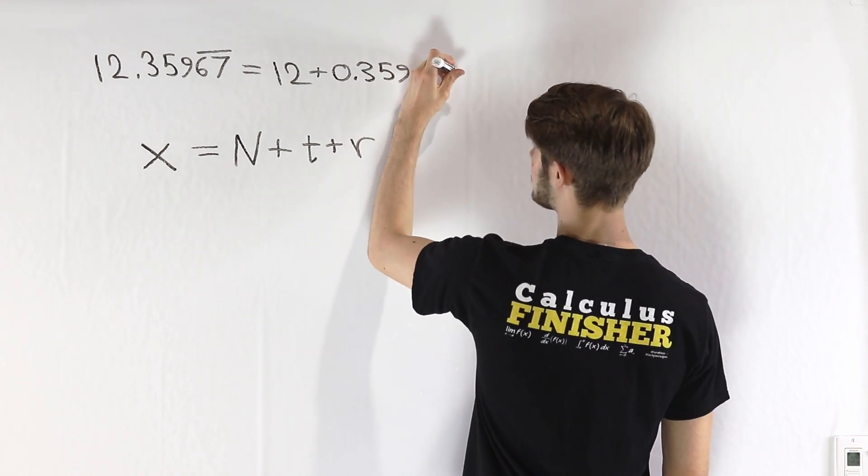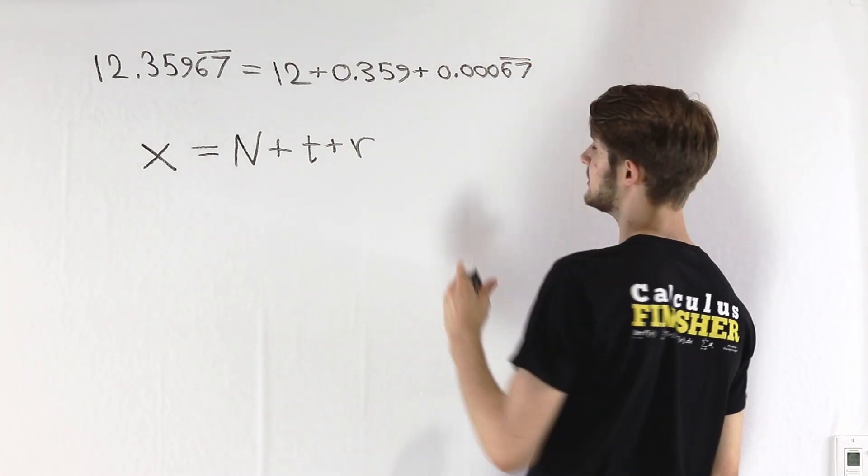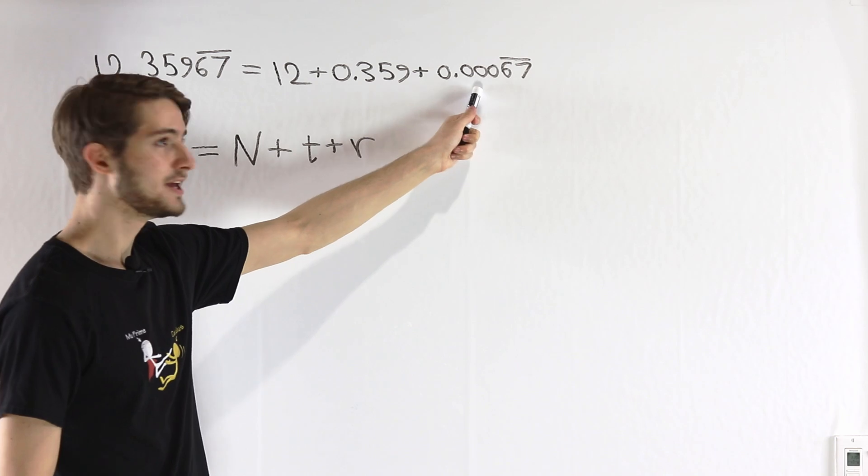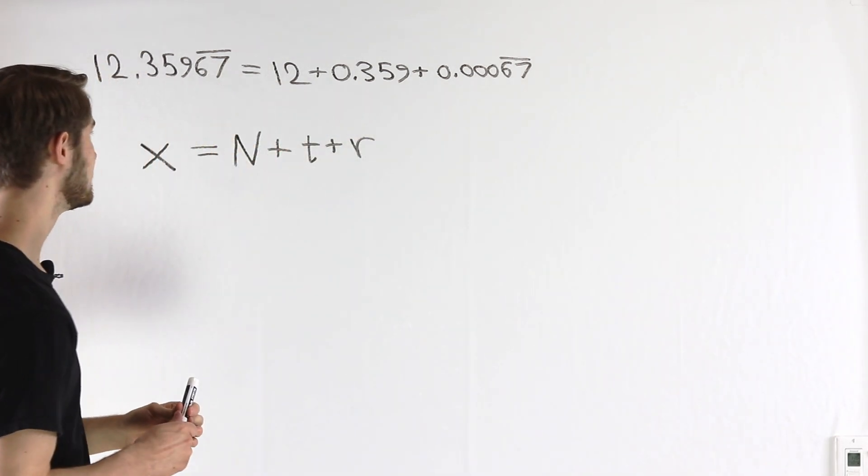In this case that's going to be 0.00067 repeating. In this case the zeros are terminating and it's just the 676767 going on forever.